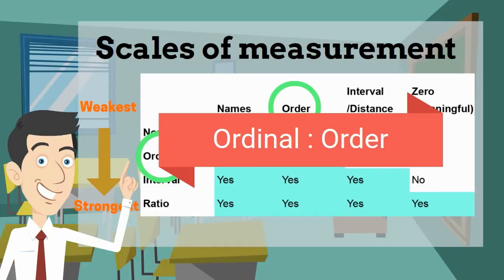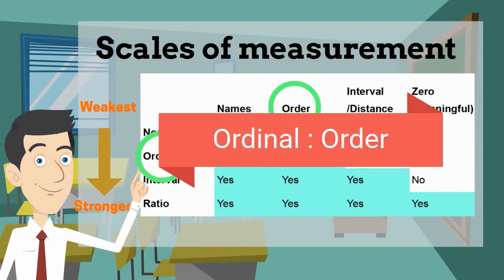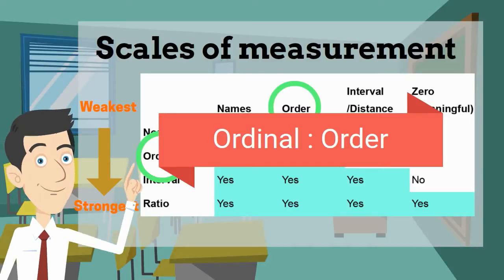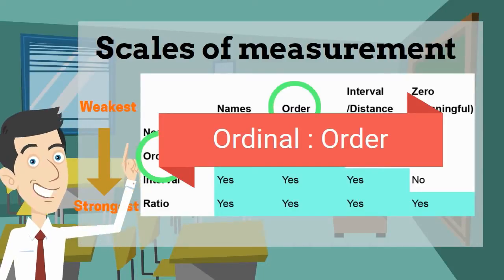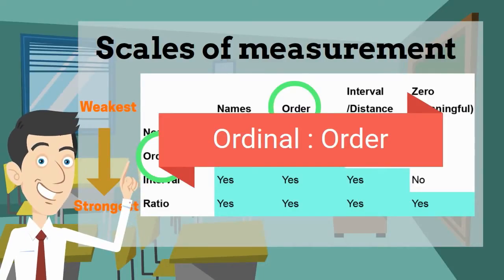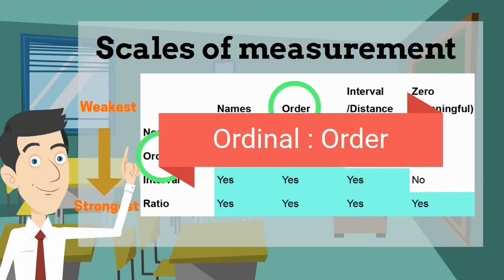Movie A has four stars and movie B has two stars, but you cannot - it's just an order. It cannot be compared in a way that movie A is two times better than movie B because it has four stars versus two stars. So it's similar to nominal, it cannot be subtracted or added, it cannot be quantified in this way.